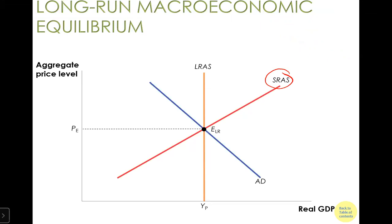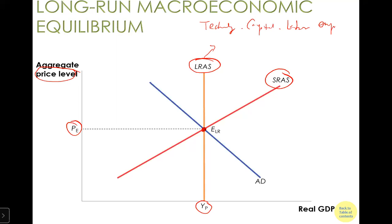If these two — aggregate demand and short-run aggregate supply — cross each other, we enter short-run equilibrium. What happens in the long run? Long run is determined by factors other than price, because the economy has enough time to adjust to price changes. In the long run, what the economy can produce relies on technology, capital, and labor employment — specifically, the natural rate of unemployment.